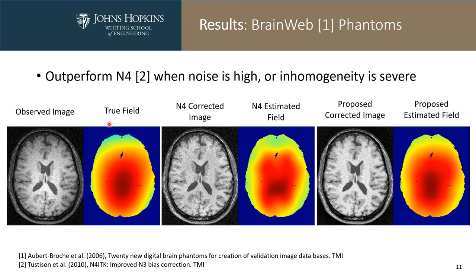Here is a visual example of the results of N4 and our proposed method. The first image is the observed image from the BrainWeb simulation, and its true inhomogeneity field. In the middle is the result of the N4 correction, and on the right is the result of our proposed method. We can see that the N4 results have some anatomical pattern in the estimated field, producing brighter inhomogeneity where there is white matter and darker where there are ventricles or gray matter. Our proposed method produces a more similar inhomogeneity field compared to the true field.